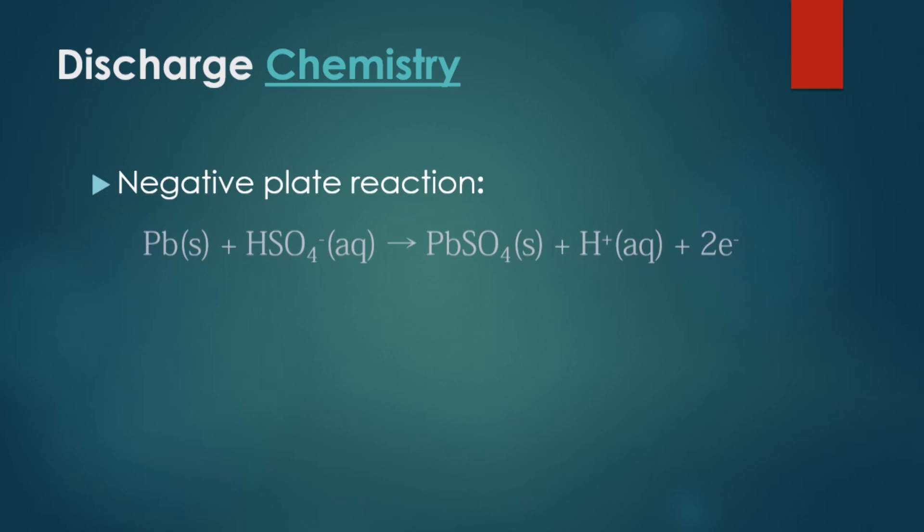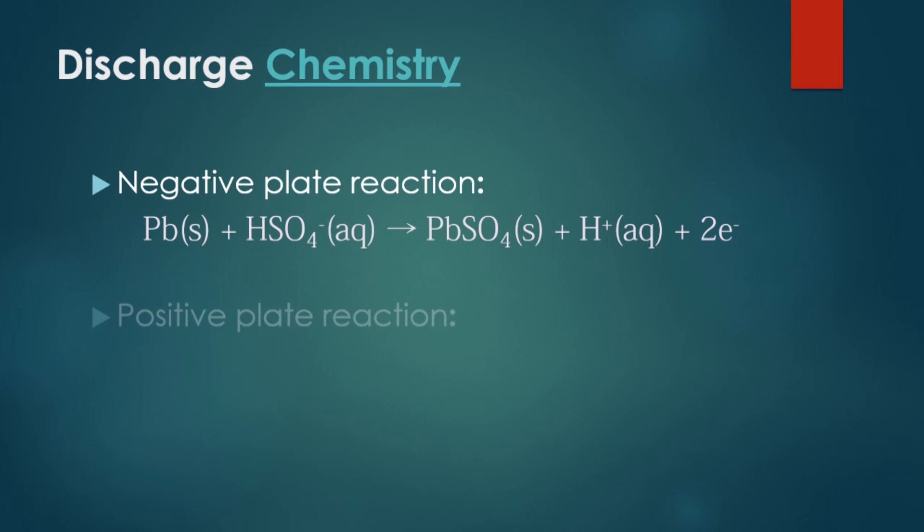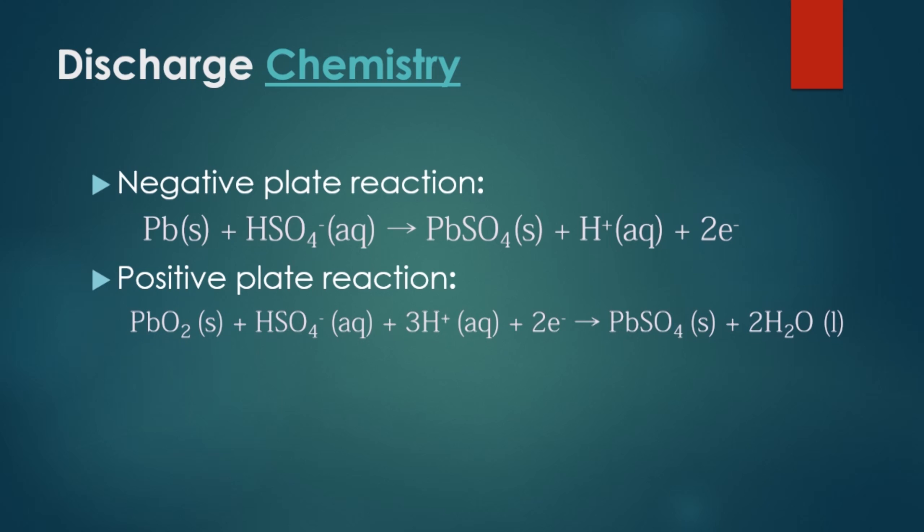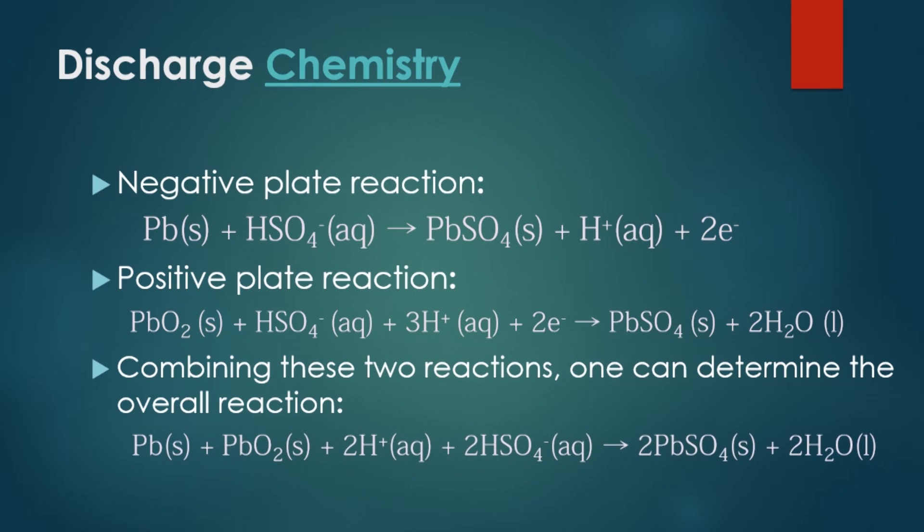So the reactions of the cell are as follows. At the anode, lead loses two electrons and reacts with hydrogen sulfate to give lead sulfate and two electrons. At the cathode, lead four oxide gains two electrons and reacts with hydrogen sulfate to give lead sulfate and water. Combining these two reactions, we get the overall reaction.